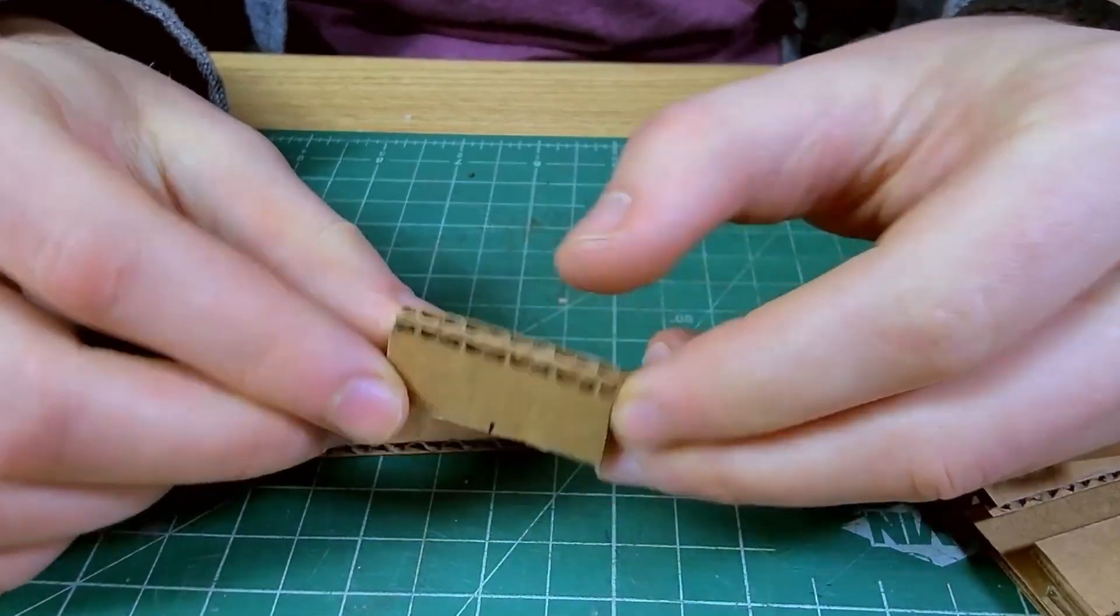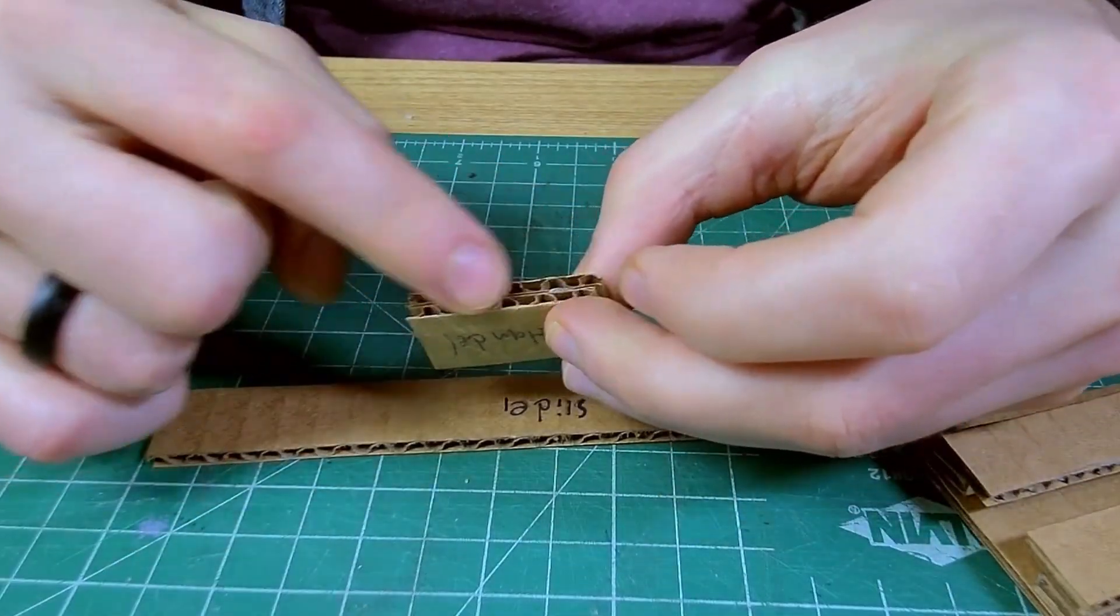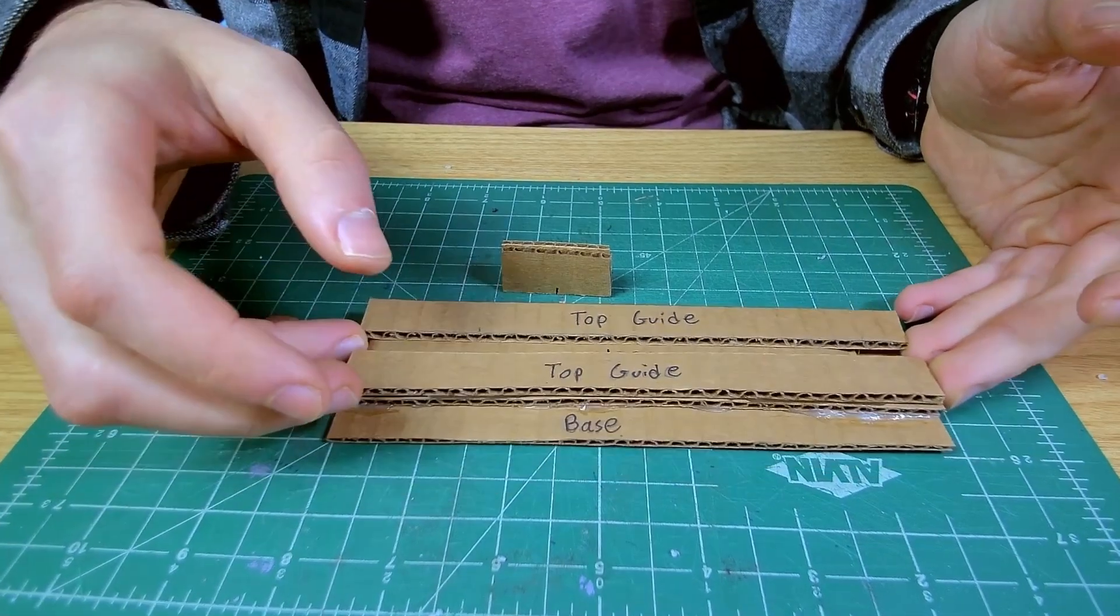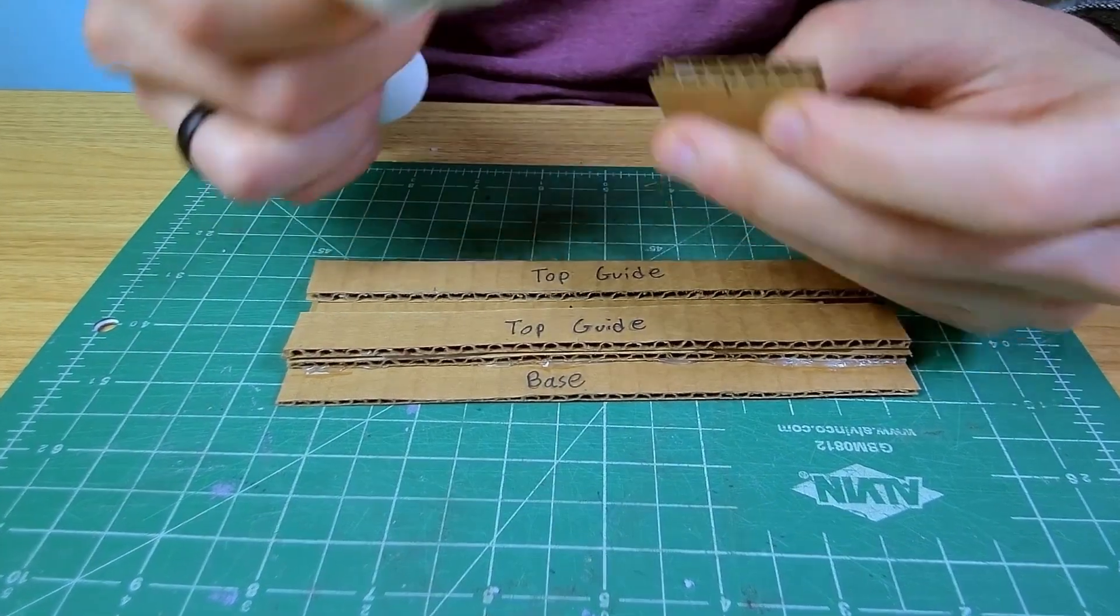I made my handle two layers thick just so it's a little bit more durable and so that I have more surface area to glue on the bottom. Instead of using a bunch of measurements, I'm just going to put my slide inside of here and glue it on while it's between those guides.